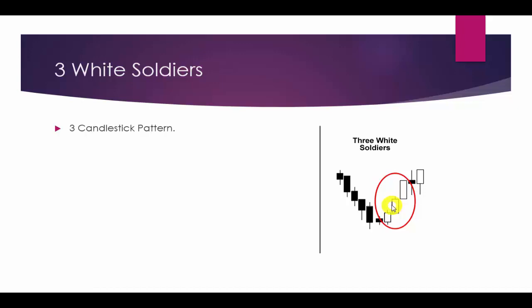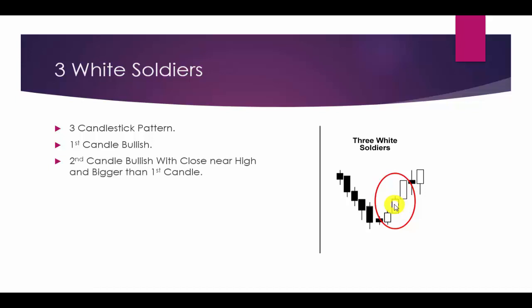Now we will see its conditions. It is a three-candlestick pattern. The first candle will be bullish, appearing after the downward trend. The second candle is also a bullish candle, but its close should be equal or near to its high point, and it should be bigger than the first candle.